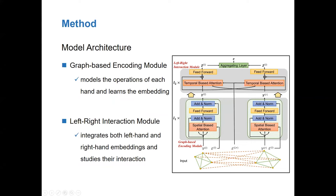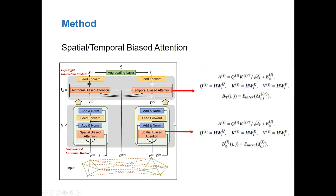Our model consists of two modules. The graph-based encoding module models the operations of each hand and learns the embedding. It consists of two blocks, and each block takes the nodes of each hand as input. The left-right interaction module integrates both left hand and right hand embeddings and studies their interactions. In the graph-based encoding module, we add the intra-edge attribute to the weight matrix of each multi-head attention to encode spatial relatedness. In the left-right interaction module, we add the inter-edge attribute to the weight matrix of each multi-head attention to encode temporal relatedness.